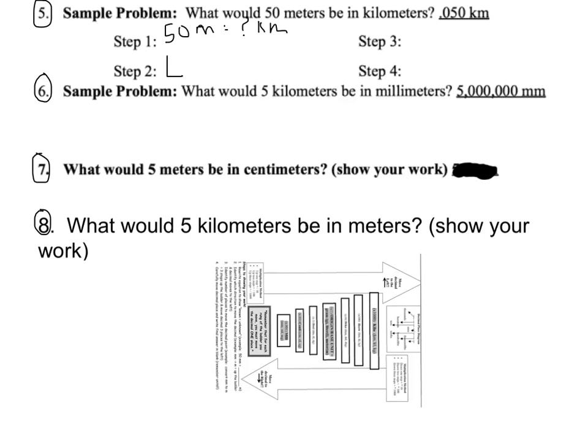In this case, we are going from meters and we're moving up the ladder. If you move up the ladder, the decimal is going to move to the left. Step three, we need to figure out how many places. So we're starting at meters. I have a metric ladder on its side. I'm going up one, two, three spots to kilometers.